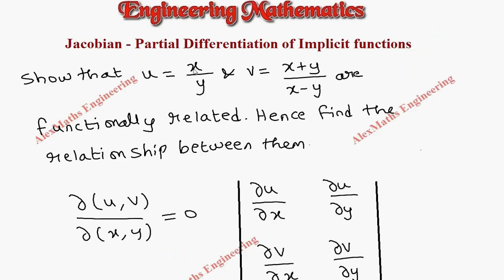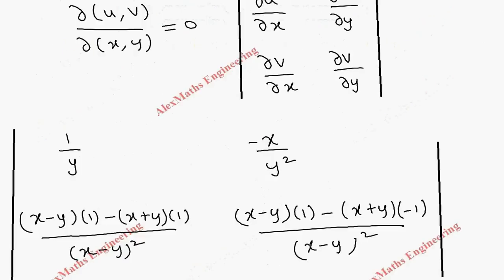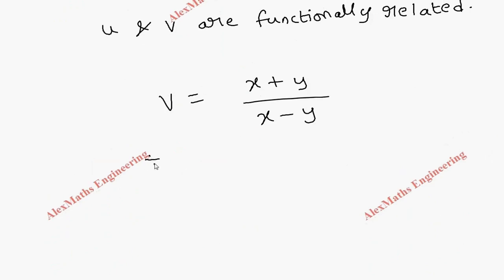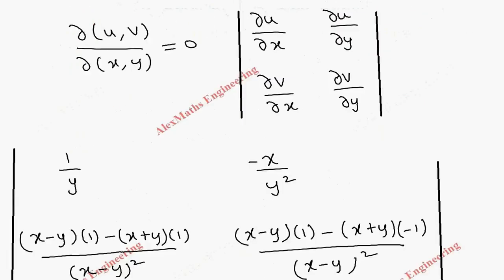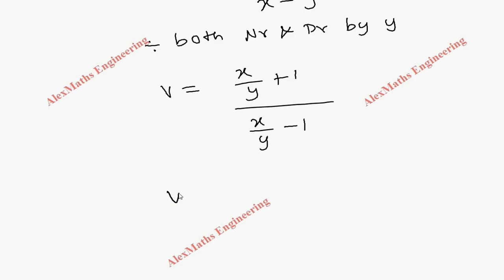Since we have u as x/y, let's try to create x/y in the expression for v. We divide both numerator and denominator by y, so v becomes (x/y + 1)/(x/y − 1). But x/y is u, so wherever x/y appears, we put u. So this becomes v = (u+1)/(u−1).